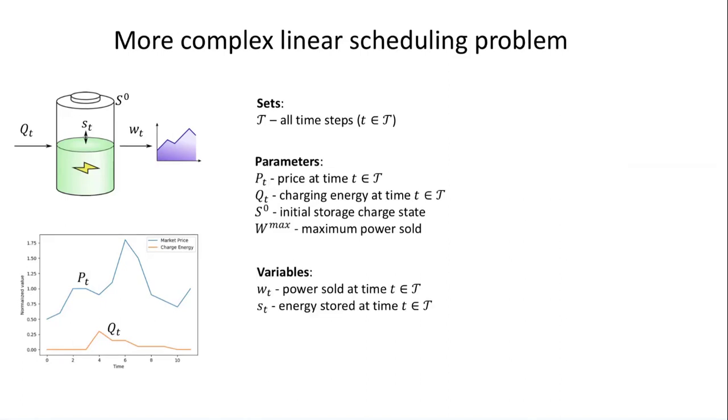The last thing we need to do is identify variables. Variables are decisions that the model is making—we call these decision variables. The obvious decision variable is how much power we're going to sell at each time period. We introduce a variable W_t, which represents the decision we make at each time step t.